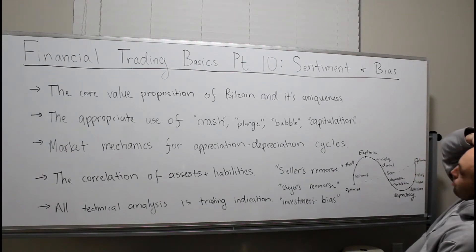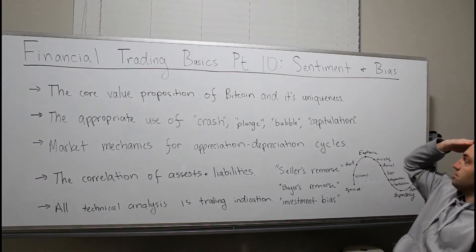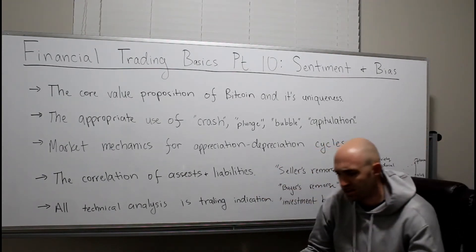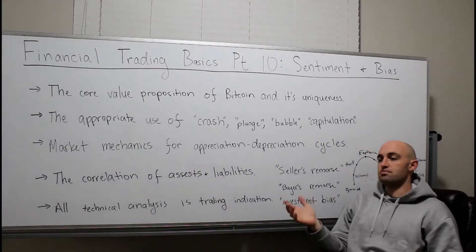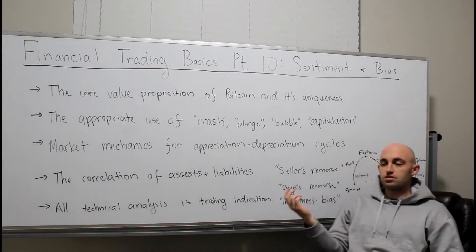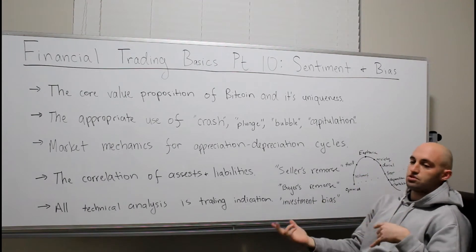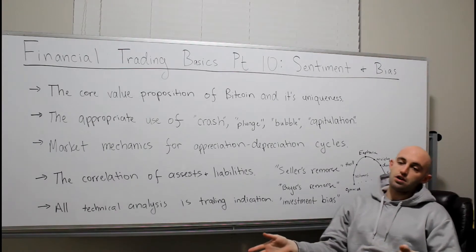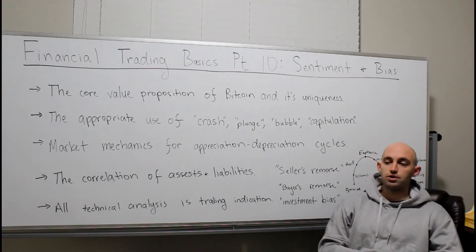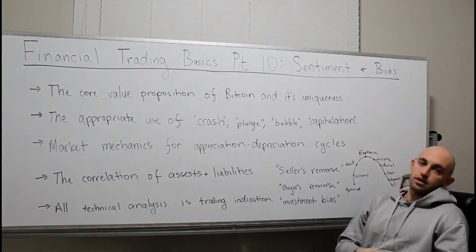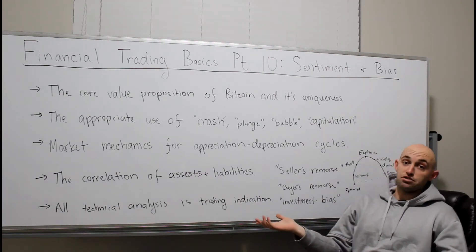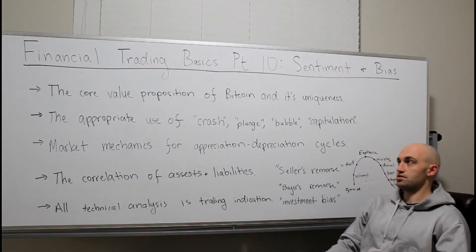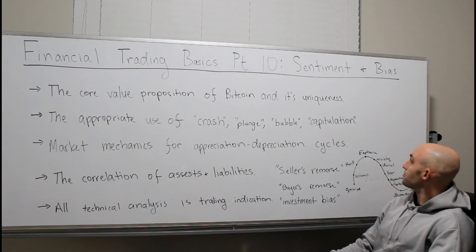The core value proposition of Bitcoin and its uniqueness, or lack thereof. I keep seeing it's just amazing to me to see other money managers using the same two arguments for or against Bitcoin. It's either a store of value like gold — that might be the only analogy I hear people use. But the core value proposition of Bitcoin is sending money for small amounts of fees instantaneously for big businesses.